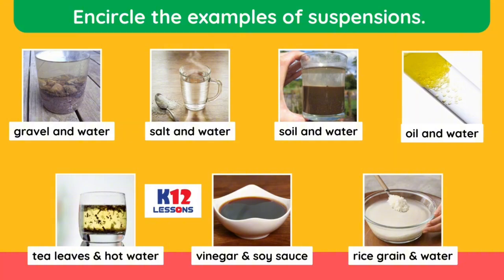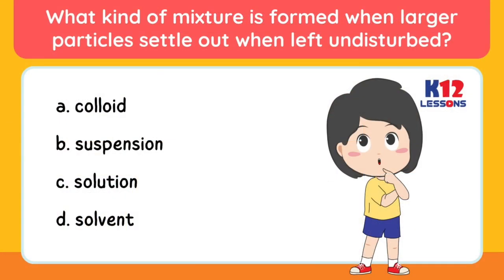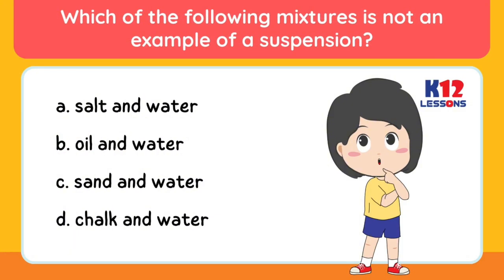Circle the examples of suspensions. Choose the letter of the best answer. What kind of mixture is formed when larger particles settle out when left undisturbed? A. Colloid, B. Suspension, C. Solution, D. Solvent. Which of the following mixtures is not an example of a suspension? A. Salt in water, B. Oil in water, C. Sand in water, D. Chalk in water.